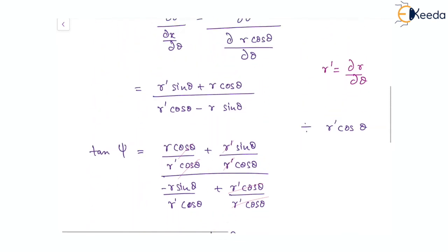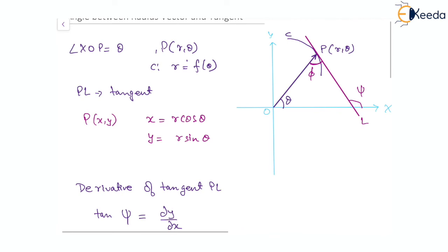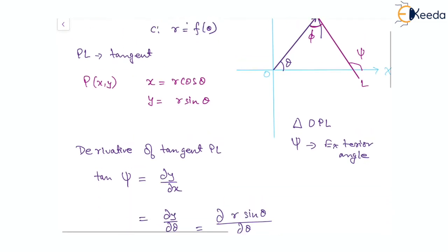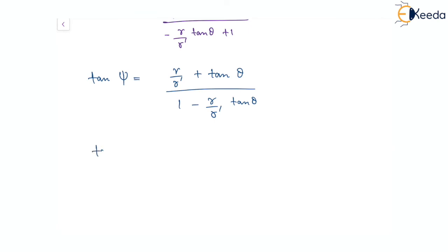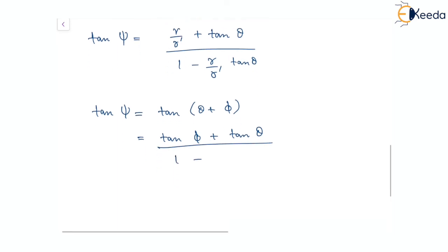Going back to the diagram, we look at triangle OPL and observe that ψ is actually an exterior angle of that triangle. By the exterior angle property of triangles, ψ equals θ plus φ. Therefore, tan(ψ) equals tan(θ + φ), which expands as (tan φ + tan θ) divided by (1 − tan φ · tan θ).